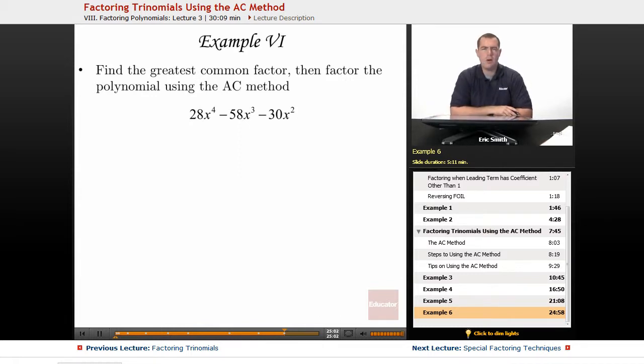Let's do one last example. I definitely wanted to do one where they had a greatest common factor that you could pull out. Notice how initially these numbers are quite large. You got 28, 58, and a negative 30.